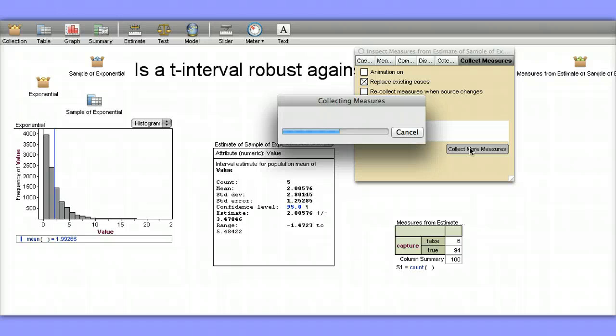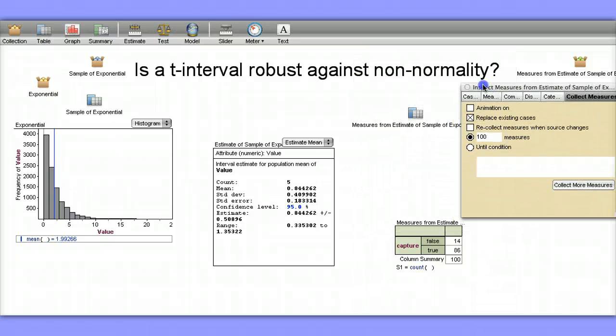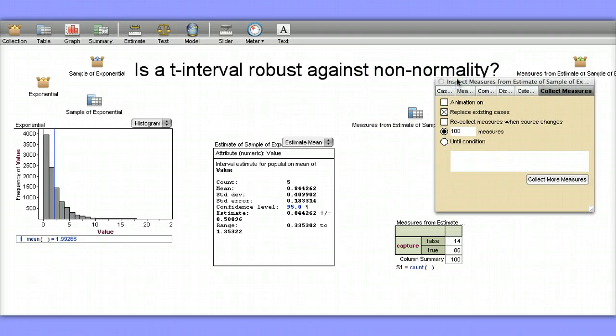We can see in the long run that these intervals are not robust. They do not hold true. We would expect 95% confidence intervals to capture the truth 95% of the time, and these don't. That's because this distribution is strongly skewed.